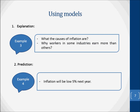Using models. Explanation: models explain by showing how things are caused — what the causes of inflation are, why workers in some industries earn more than others, and so on. Prediction: models are sometimes used to make simple forecasts. For example, inflation will be below 5% next year. Usually, however, predictions are of the if-then variety. For example, if demand for goods X rises, its price will rise.